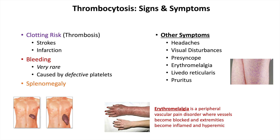With regards to lab work, thrombocytosis can be associated with hyperkalemia — an increased potassium level in the blood. We call this spurious hyperkalemia: it is not a true elevation in blood potassium, but rather so many platelets are present that they interfere with our measurements of potassium.